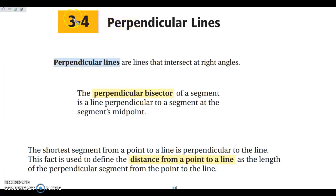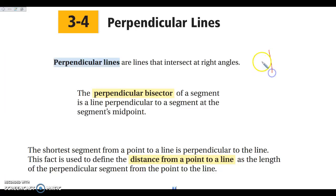Good afternoon everybody. Today we are looking at 3.4, which is perpendicular lines. As a reminder, we've already talked about perpendicular lines, but a reminder that perpendicular lines are lines that intersect to form right angles. So when I have two lines that intersect, I will have 90-degree angles right here.